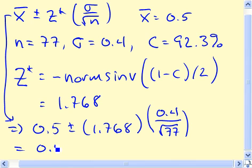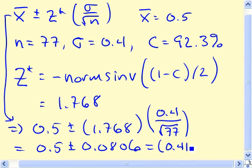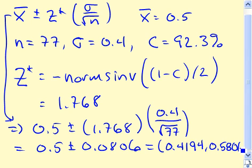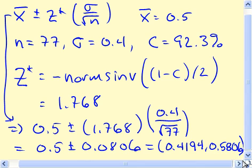And this is 0.5 plus or minus—the margin of error is this part here. If we calculate that, we get 0.0806. And if we do the plus and the minus part there, the lower limit is 0.4194 and the upper limit is 0.5806. And that'll do it.